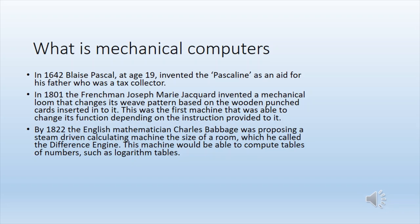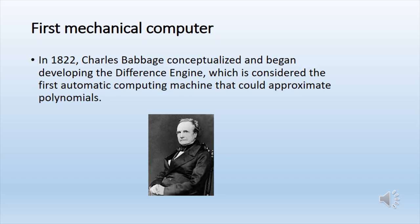By 1822, the English mathematician Charles Babbage was proposing a steam-driven calculating machine the size of a room, which he called the difference engine. This machine would be able to compute tables of numbers, such as logarithm tables. The difference engine is considered the first automatic computing machine that could approximate polynomials. Babbage also invented and developed his analytical engine in the late 1830s, which was never fully constructed but whose design was highly influential.